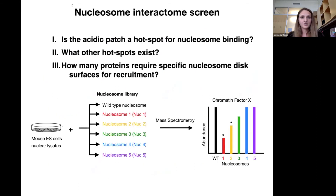This encouraged us to ask three questions. Is the acidic patch a hotspot for nucleosome binding? What other hotspots exist? And how many proteins require specific nucleosome disk surfaces for recruitment?